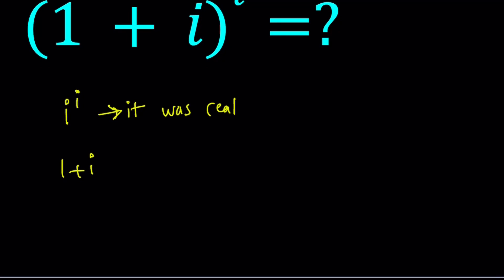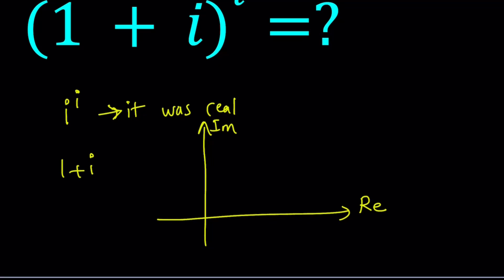Notice that 1 plus i on the complex plane is represented by the point (1, 1), because 1 is the real part and 1 is the imaginary part — the imaginary part being the coefficient of i, which is 1. So we mark (1, 1) on the coordinate plane and connect it to the origin, which gives us the modulus or absolute value of the complex number.